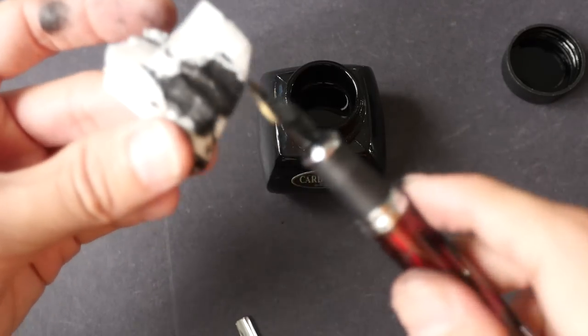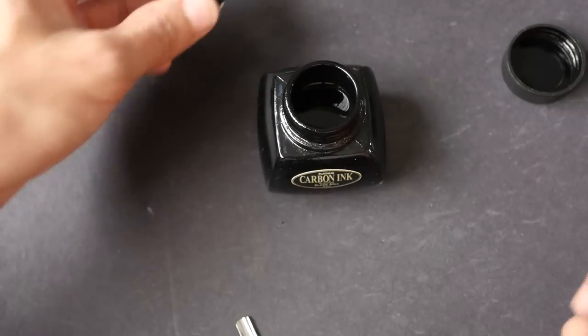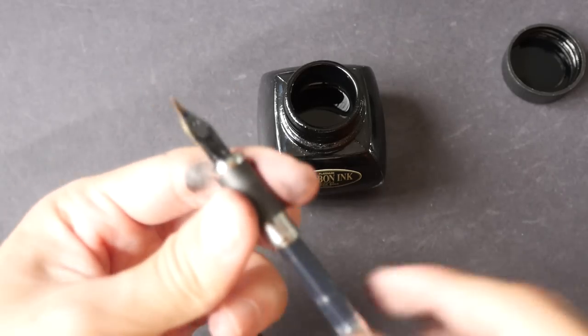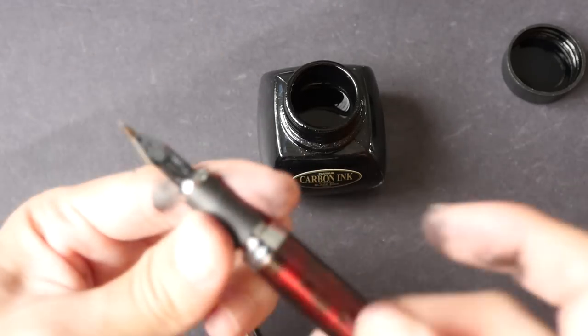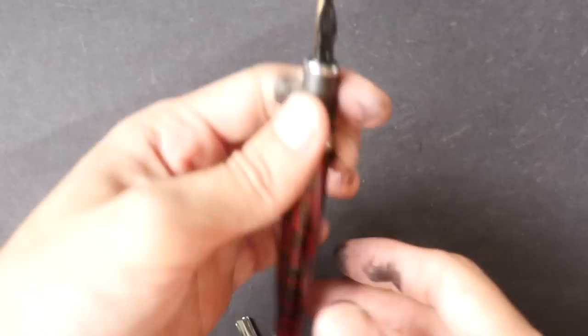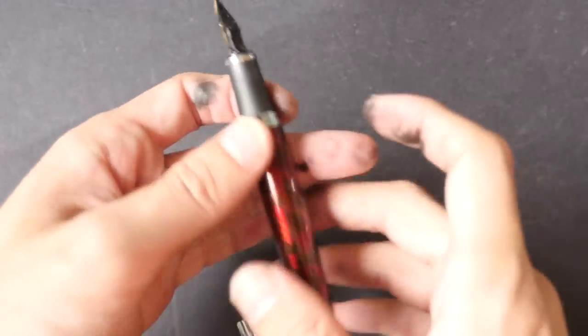When you leave the nib overnight, the ink may dry up the next day. But you can, like I mentioned just now, just twist a converter to force the ink out a bit so that you can use the pen again. And if the ink somehow clogs the pen, you can again pull out the nib to just clean the pen.